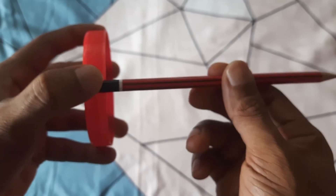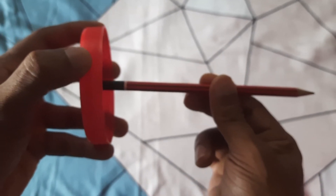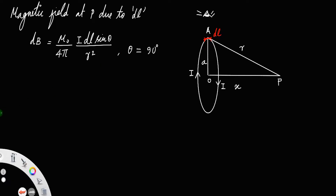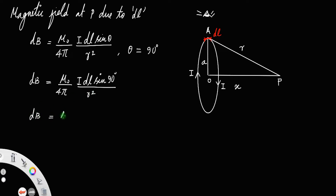So, dB will be equal to μ₀/4π × IDL/R², which we can call equation 1, since sin 90° = 1.